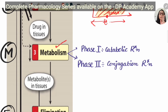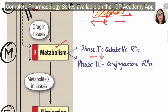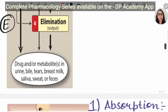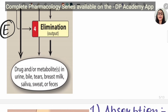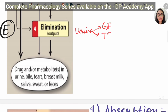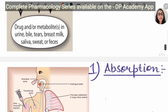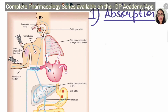Metabolism is to make the drug water soluble. We have two phases: phase one attaches a functional group to the drug, making it sticky so it can continue to phase two, which makes the drug water soluble. Phase one includes catabolic reactions and phase two includes conjugation reactions. These are carried out by microsomal as well as non-microsomal enzymes. The last step — E in ADME — is elimination: the drug is excreted via urine through glomerular filtration or tubular secretion.